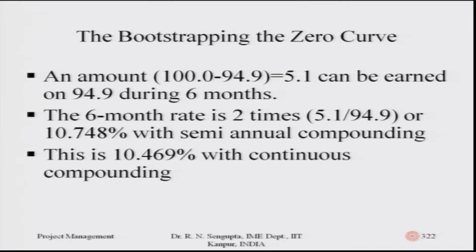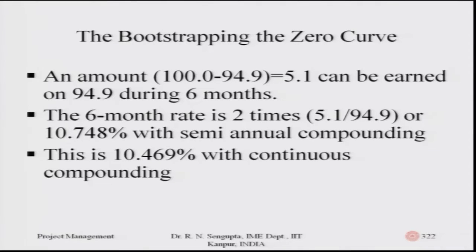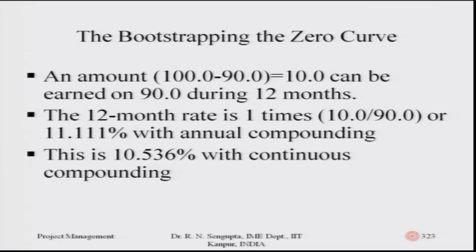This is semi-annual compounding. To find the continuous compounding rate, we use the formula discussed in the last class. Based on 10.748, which is the semi-annual compounding rate, the continuous compounding rate is found to be 10.469 percent.